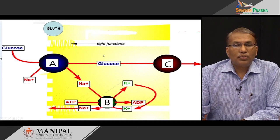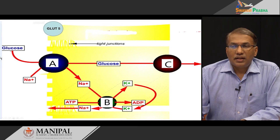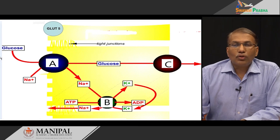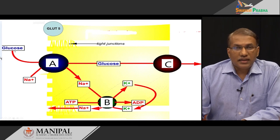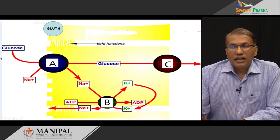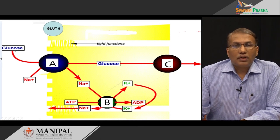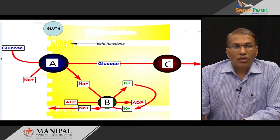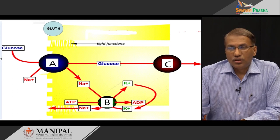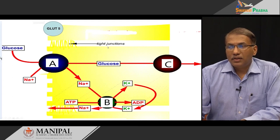This has two benefits. One benefit is that if more carbohydrate is left over in the intestinal lumen, it can further cause gas formation due to bacterial fermentation and cause a lot of discomfort. So this dual absorption mechanism minimizes that effect.